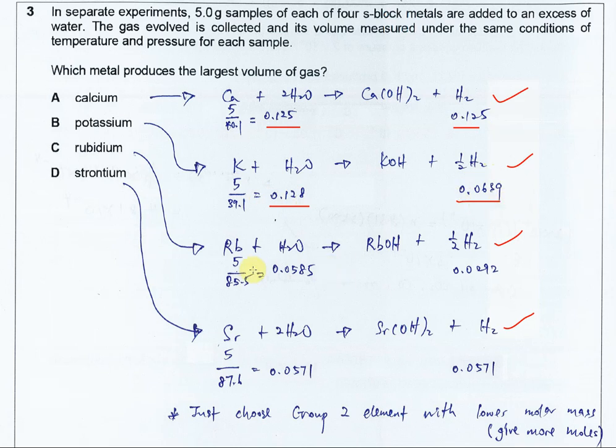You do the same calculation for rubidium. You get this which is a smaller mole. Hydrogen is halved, so you get this.